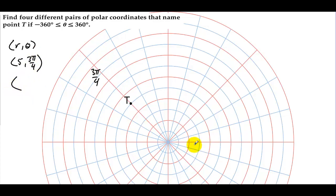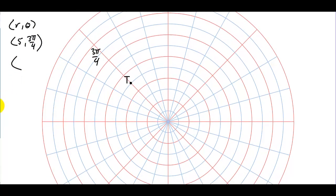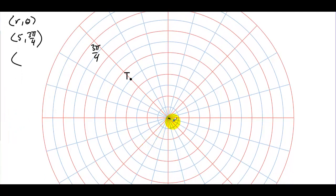What if we went, instead of 3π/4, what if we went -π/4? So -π/4 this way, and then go in the opposite direction. So we could go -5 and -π/4.